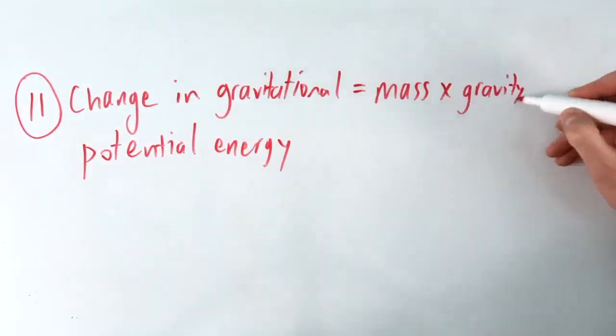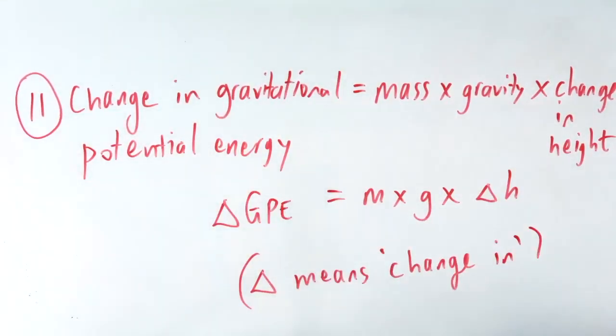Eleven, change in gravitational potential energy equals mass times gravity times change in vertical height.